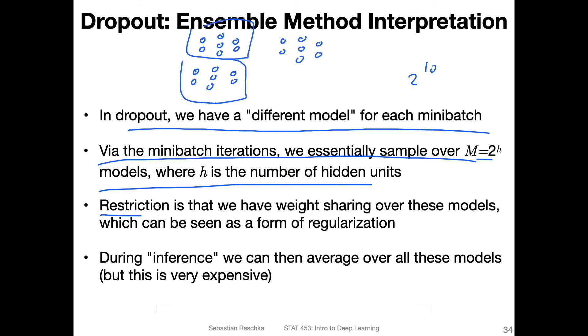In this first one, first forward pass, we drop this one, and in the other one, we drop this one. And then here, we drop these ones. So we have three different networks here. But we don't use all of them in parallel.